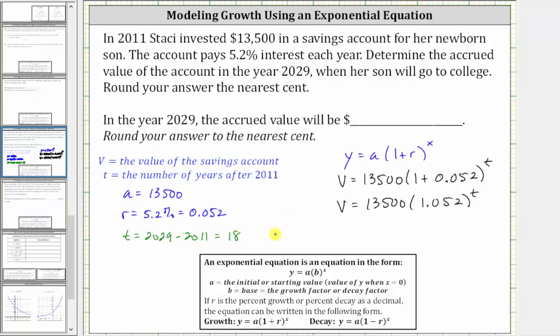So when t equals 18, the value v is equal to 13,500 times 1.052 raised to the power of 18. And now we go to the calculator, and we're told to round to the nearest cent.